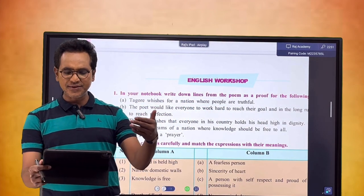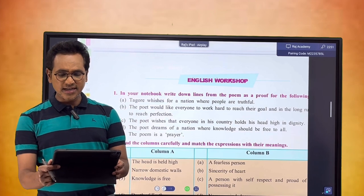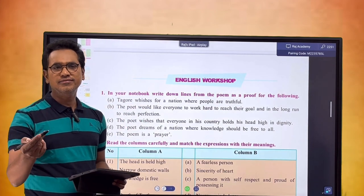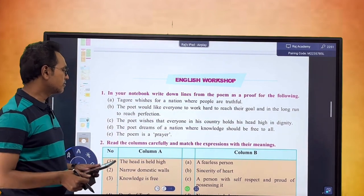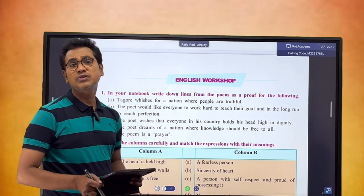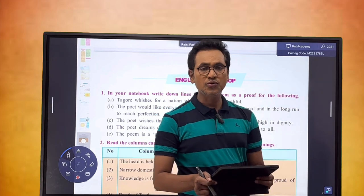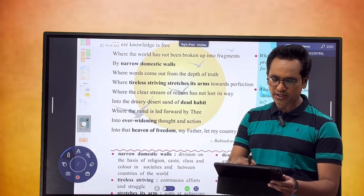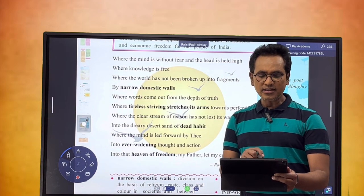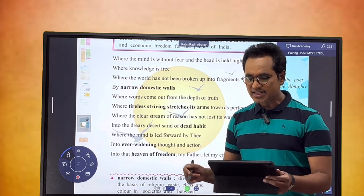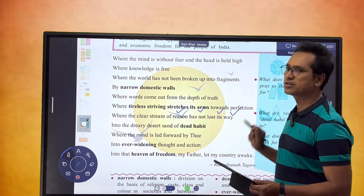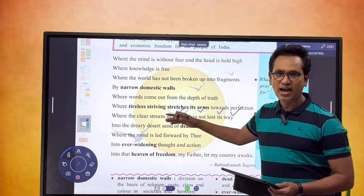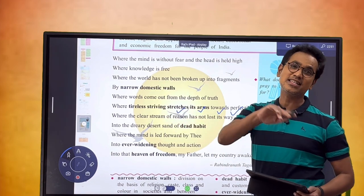The poet would like everyone to work hard to reach their goal and in the long run to reach perfection. This is another desire or prayer of the poet. Where does this come from? Where tireless striving stretches its arms towards perfection. The word perfection has come in the poem and the same word perfection is in the exercise.